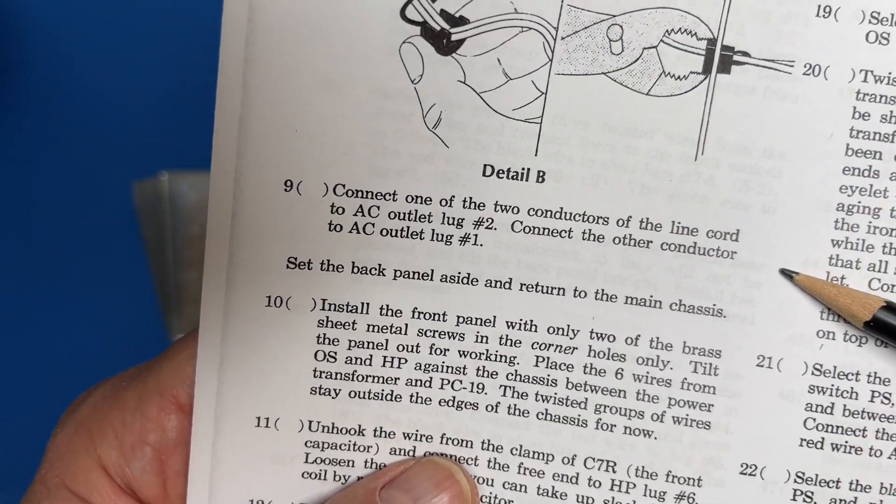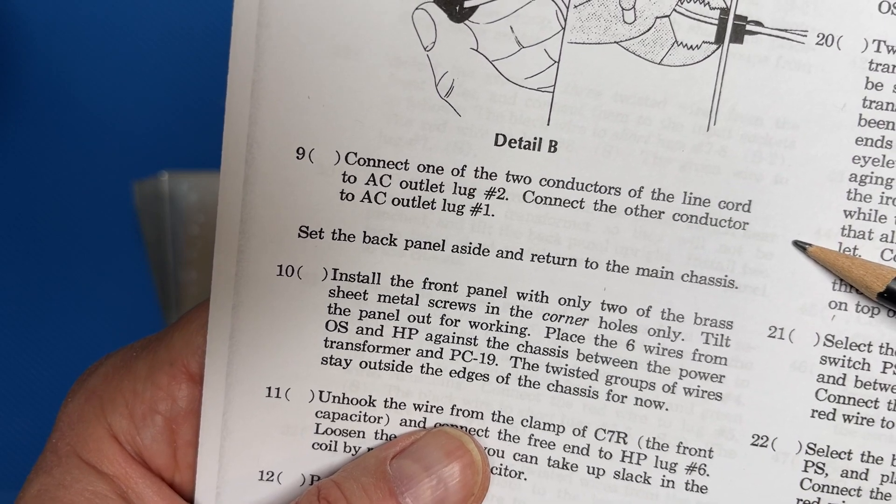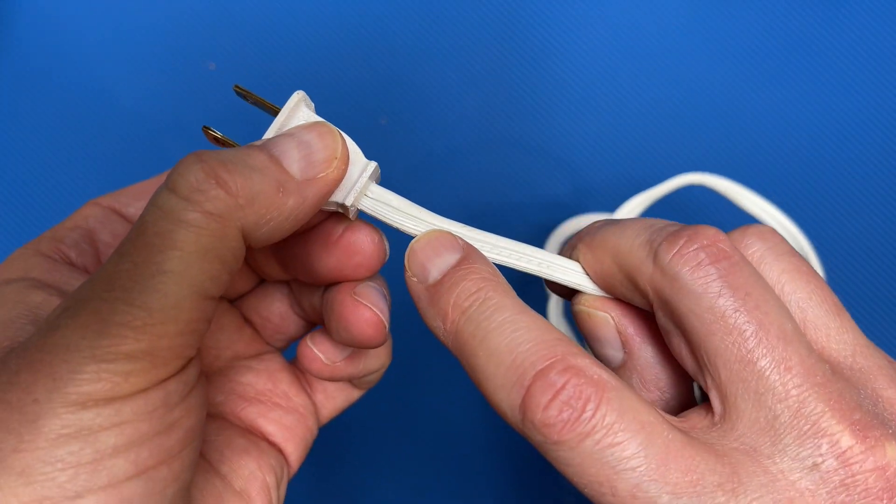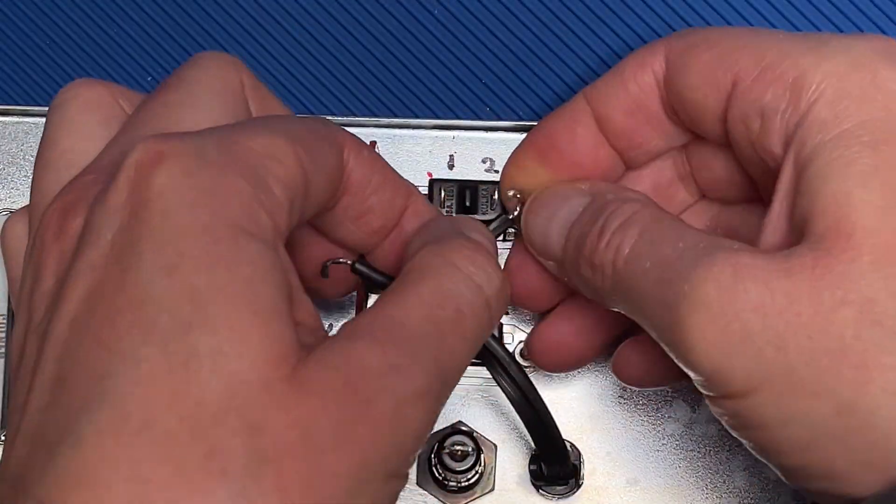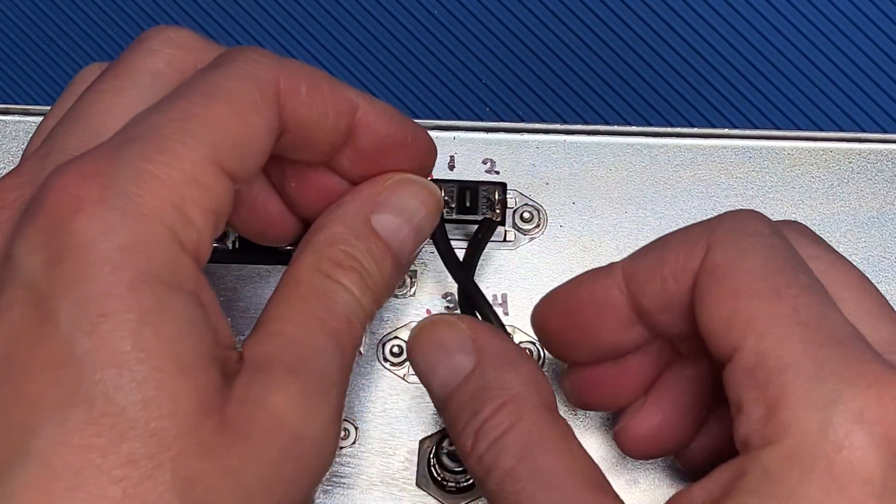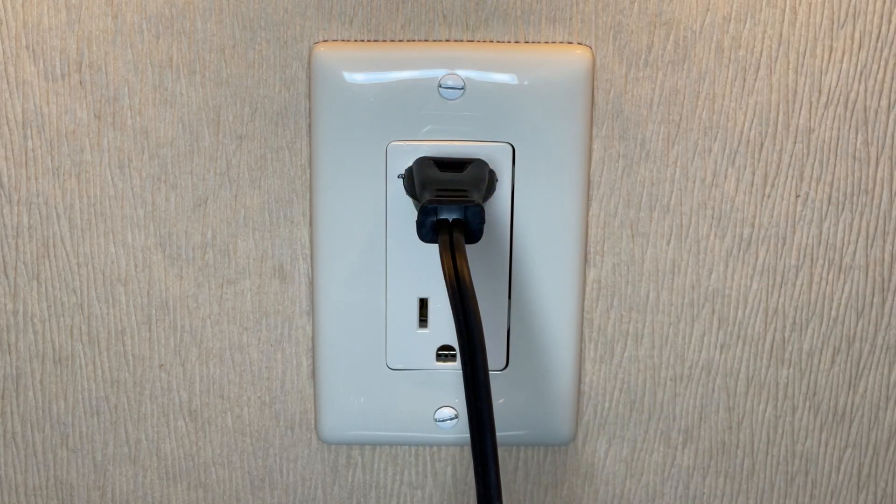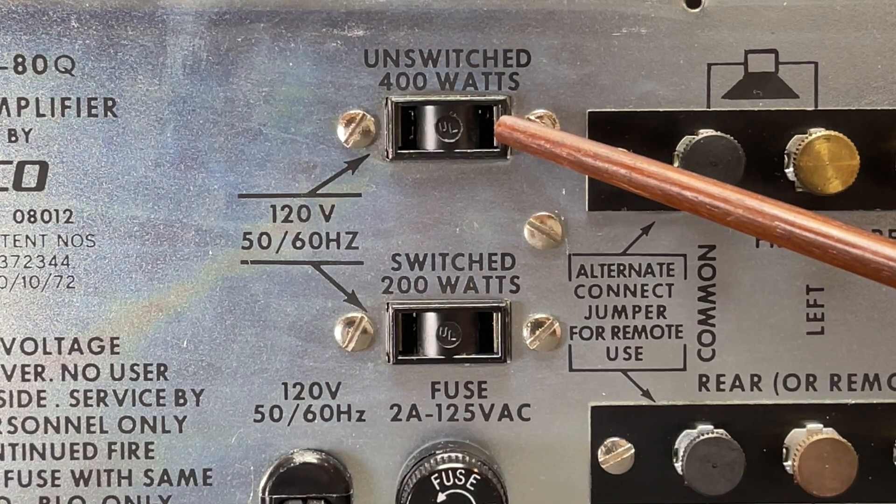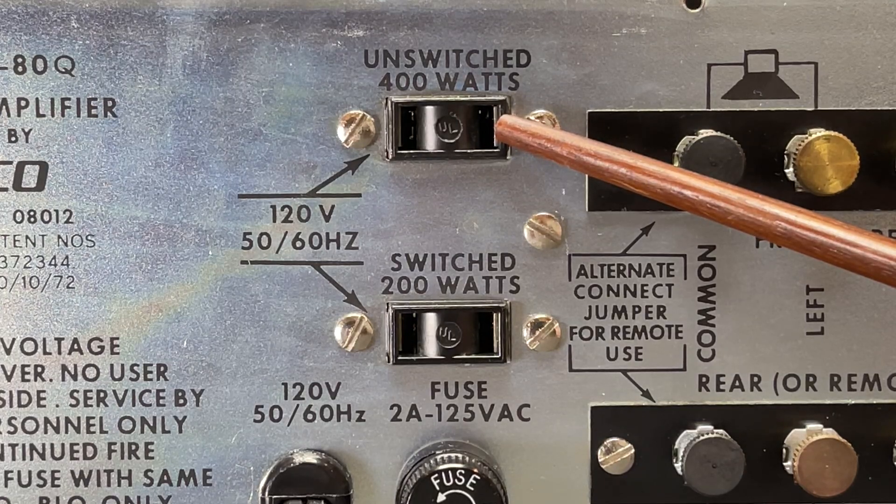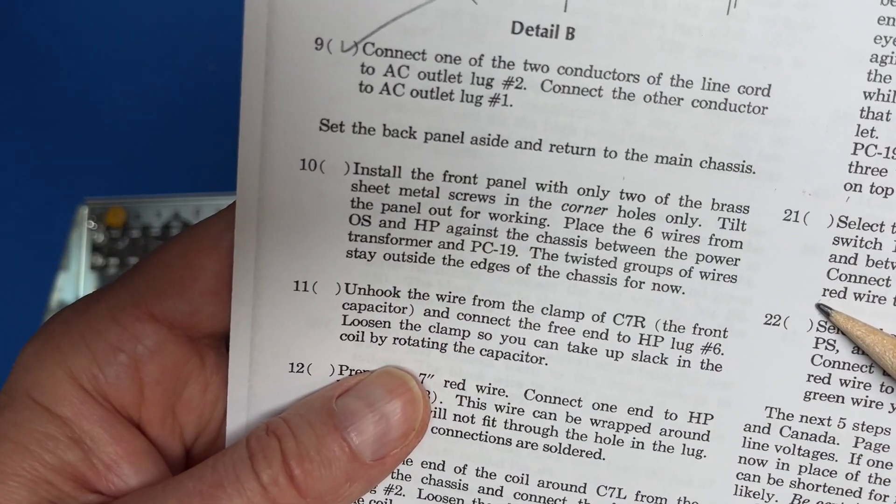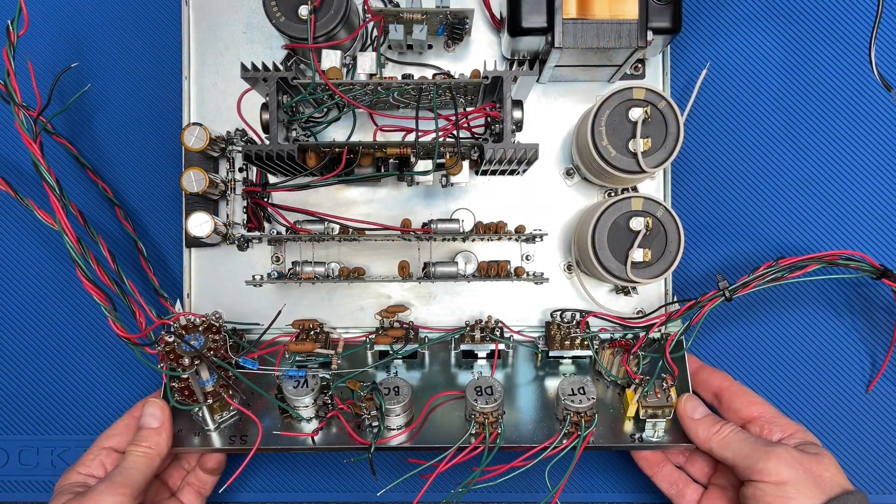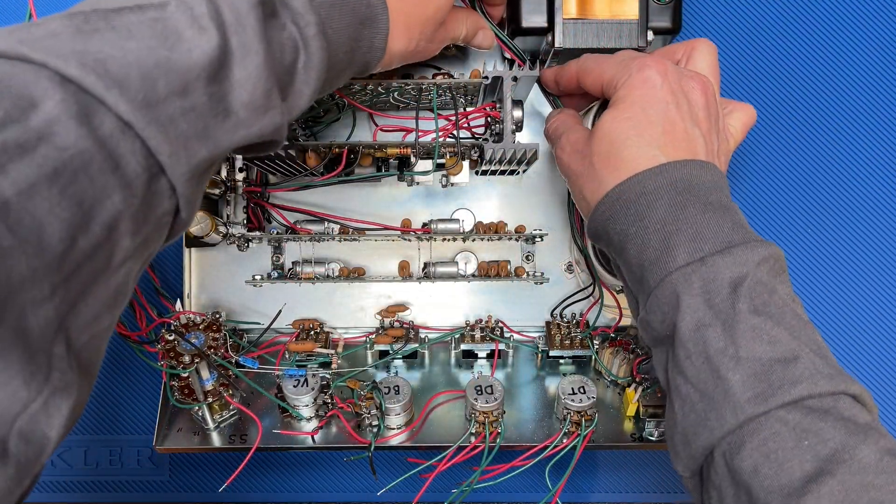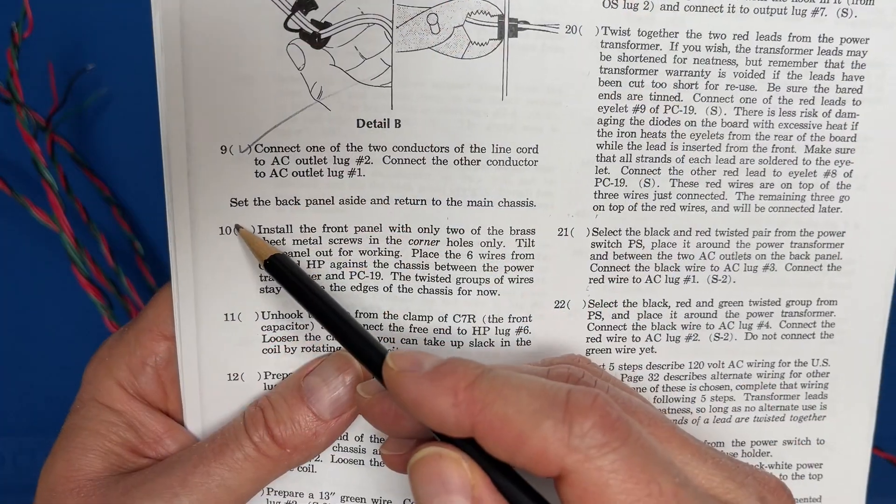Step 9: connect the line cord to the AC outlets. Before I do that, take a look at this more modern line cord. Note that the grooved wire connects to the neutral prong and the smooth wire to the hot. Let's mark the smooth side of the Dynaco cable as hot and the right side of the AC outlets as hot and wire accordingly. Now, even though the amp doesn't use polarized AC, at least I know that if I insert the smooth side of the plug into the hot of a receptacle, that the right side of the accessory jacks is also hot as with a modern polarized outlet. Step 9, done. Step 10: install the front panel to the main chassis. Here's our front panel. We're instructed to install just the two corner screws. Tilt the panel out for working and place the six wires from OS and HP between the transformer and PC19. Step 10, done.